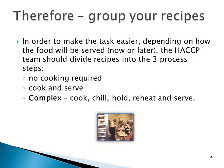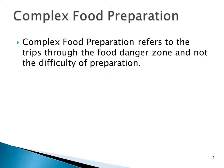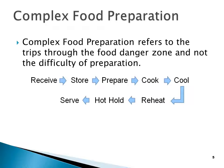You're going to chill them to a certain temperature in a certain time, and reheat them to a certain temperature. So you can group them and that'll make it easier and faster to get the job done. For complex food items, we're going to receive them, store them, prepare them, cook them, cool them down, reheat them, hot hold until time for service, and then serve them. That process is called complex food preparation.